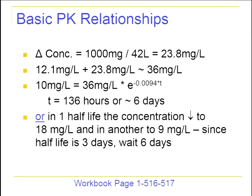The change in concentration from one gram was 23.8, so giving another gram will also raise the concentration by 23.8. The concentration on March 24th is 12.1, add 23.8, and the concentration after the second dose will be about 36 mg/L. Using the equation C = C0 × e^(−KT), we know K is 0.0094. Starting at 36 and targeting a concentration of 10 for the next dose, we calculate a time of 136 hours, or about six days.